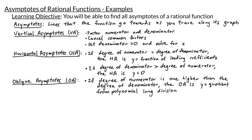Lastly, we have oblique asymptotes, or OAs. Oblique asymptotes are also found by looking at the end behaviors of rational functions. We only end up with oblique asymptotes when the degree of the numerator is just one higher than the degree of the denominator. When that's the case, the oblique asymptote is y equals the quotient from polynomial long division. If the degree of the numerator is any higher, we would no longer have an oblique asymptote. One thing to note is that it's not possible to have both a horizontal asymptote and an oblique asymptote — your rational function will have one or the other, or maybe neither.